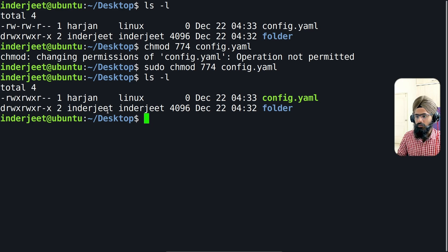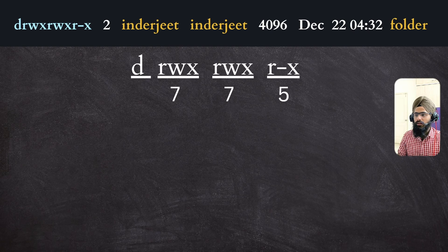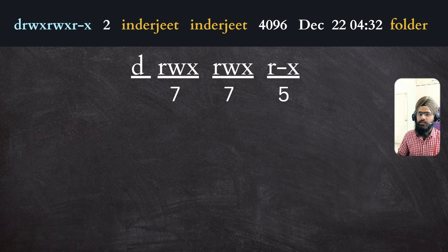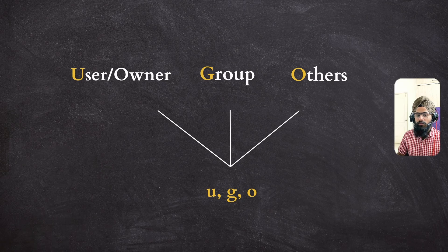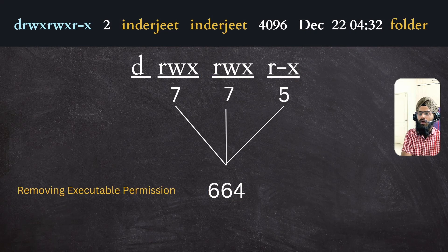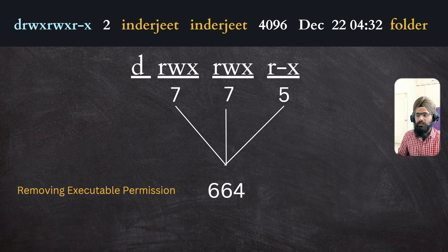There is another way to change permissions — using the symbolic group set notation. I'm taking a folder as an example; its current permission is 775. If you want to remove the executable permission, the resulting number would be 664. Instead of the numbering system, you can use group set symbols: u for owner, g for group, and o for others.